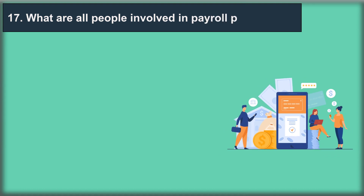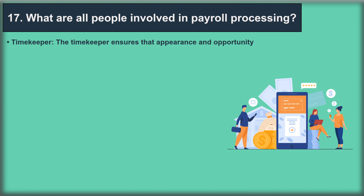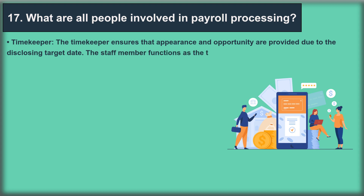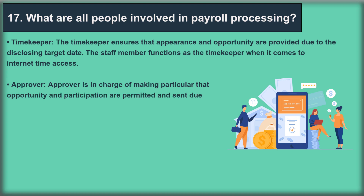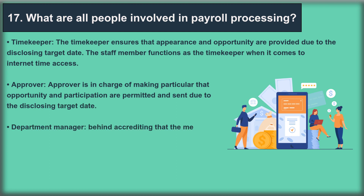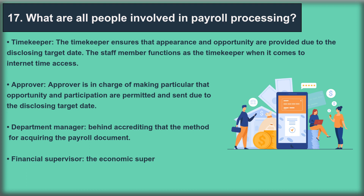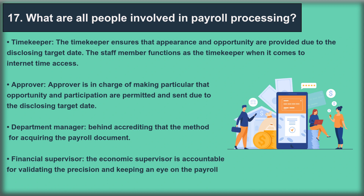Question 17: What are all people involved in payroll processing? The Timekeeper ensures that attendance and hours are provided by the reporting deadline; the staff member functions as the timekeeper for internet time access. The Approver is responsible for ensuring that time and attendance are approved and submitted by the reporting deadline. The Department Manager is responsible for authorizing the method for acquiring the payroll document. The Financial Supervisor is accountable for validating the accuracy and monitoring the payroll.